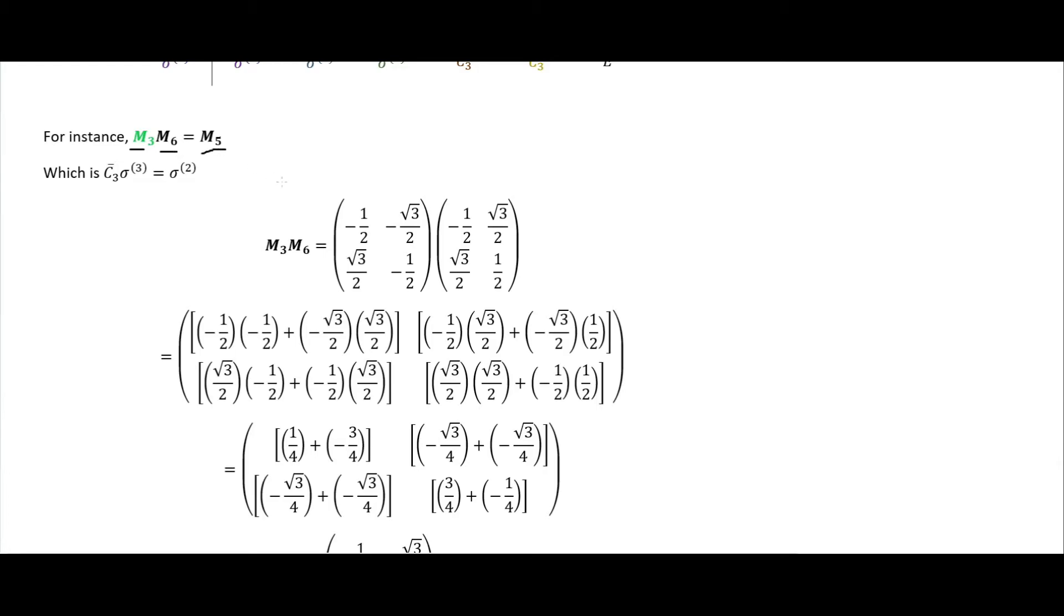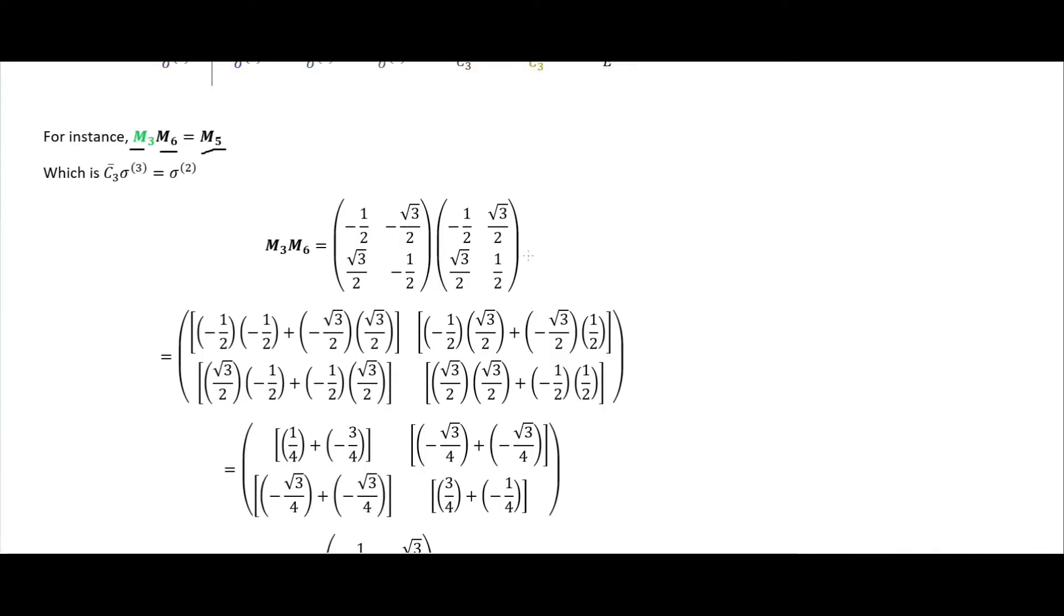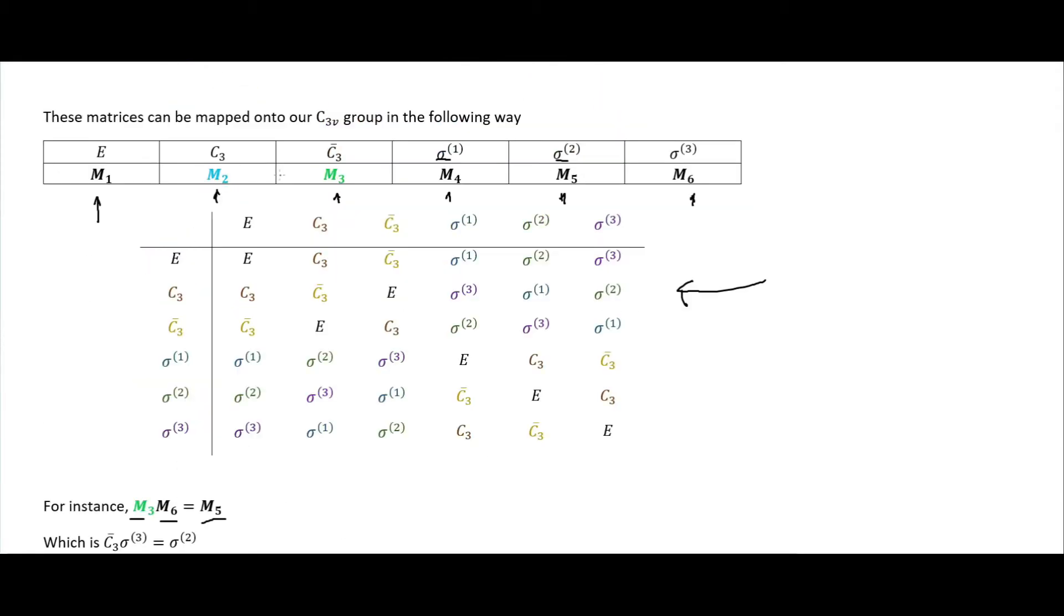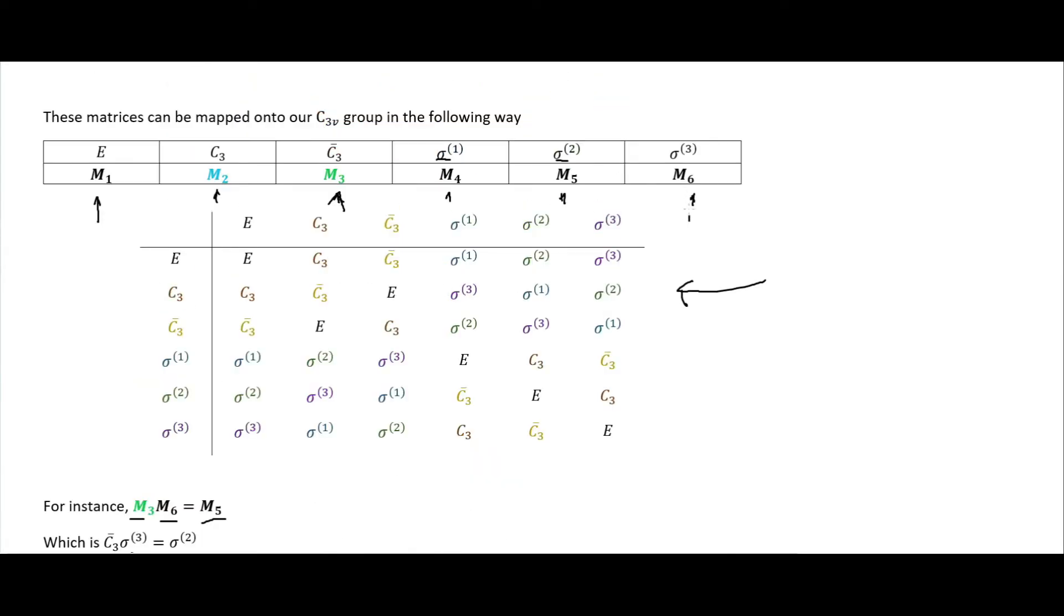For instance, this is doing matrix multiplication of M3 with M6, which gives us M5. I go through the matrix multiplication steps here. Since M3 is mapped onto C3 bar, that's what we have right here. Sigma3 is mapped onto M6, that's right here.